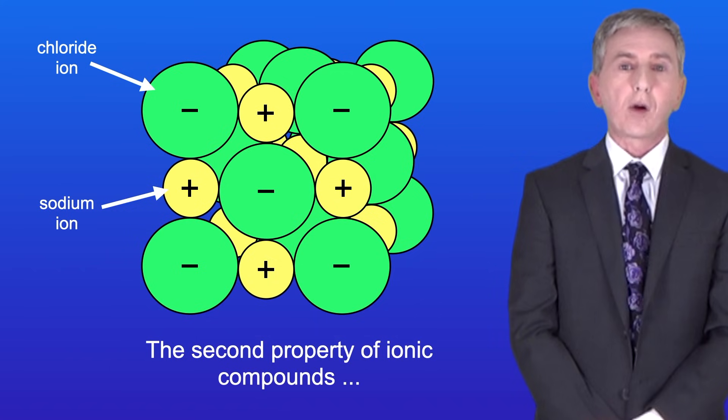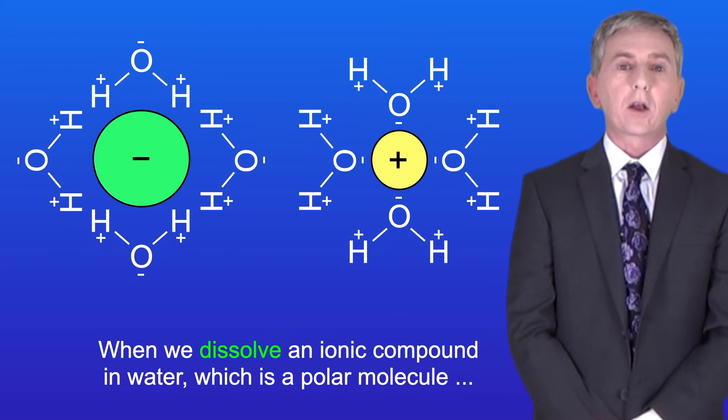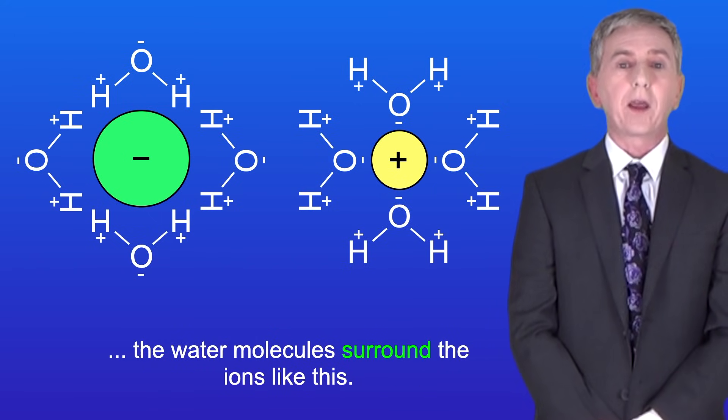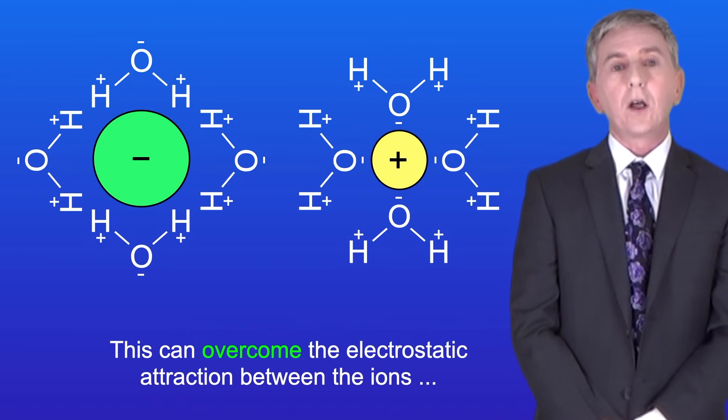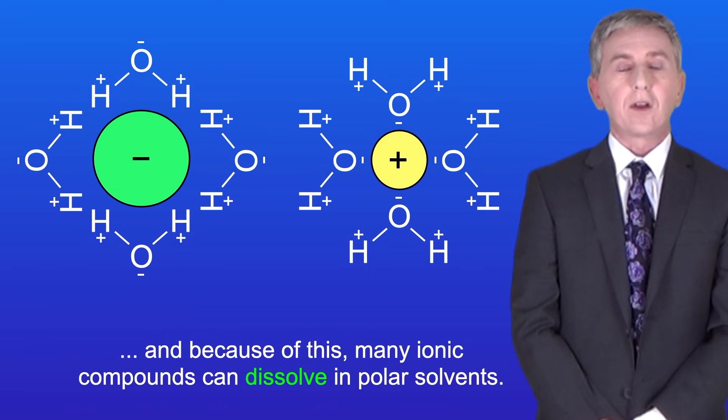The second property of ionic compounds is that they tend to be soluble in polar solvents such as water. When we dissolve an ionic compound in water, which is a polar molecule, the water molecules surround the ions. This can overcome the electrostatic attraction between the ions and because of this, many ionic compounds can dissolve in polar solvents.